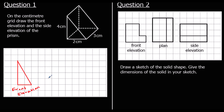And the side elevation: if you looked at it from the side, it will be 3 along and 4 up — a base of 3, 3 along the bottom, and 4 up. And that is our side elevation.